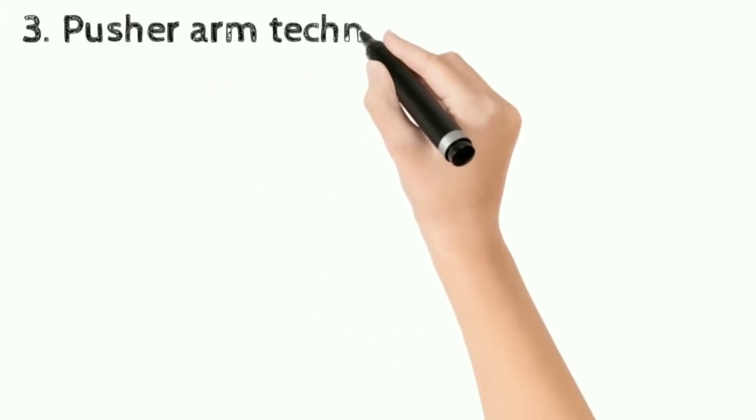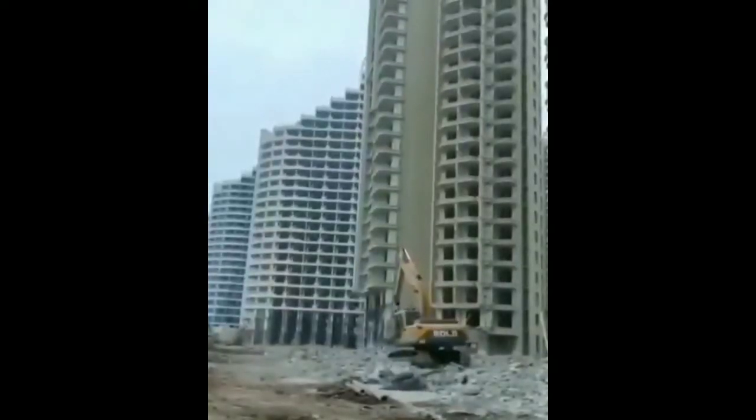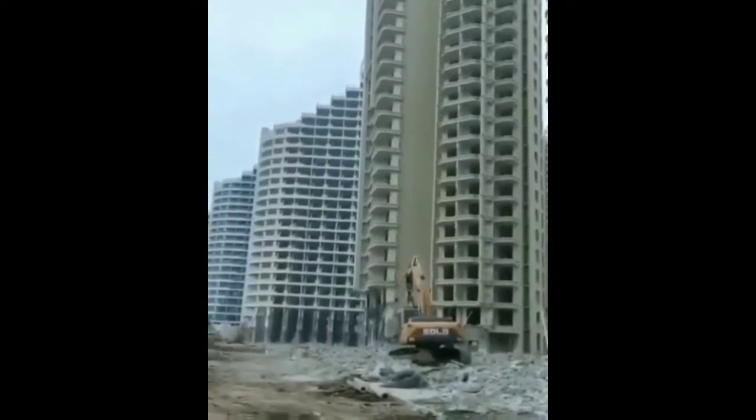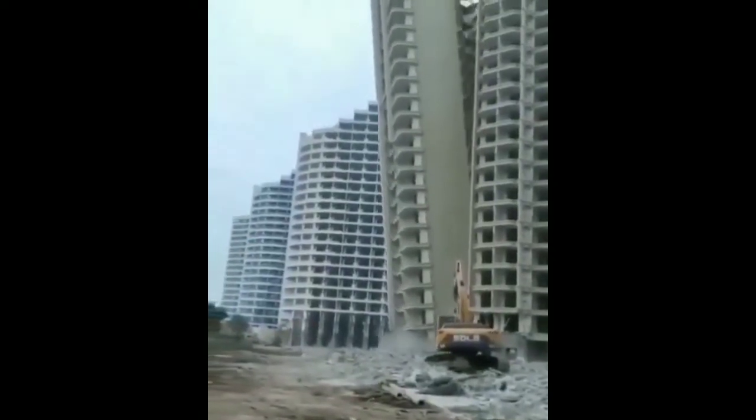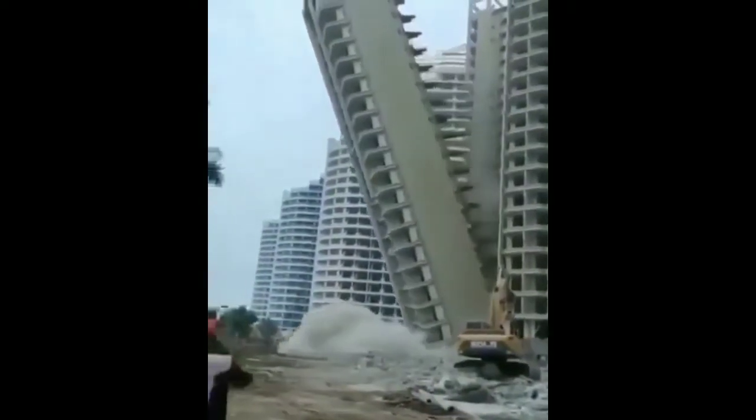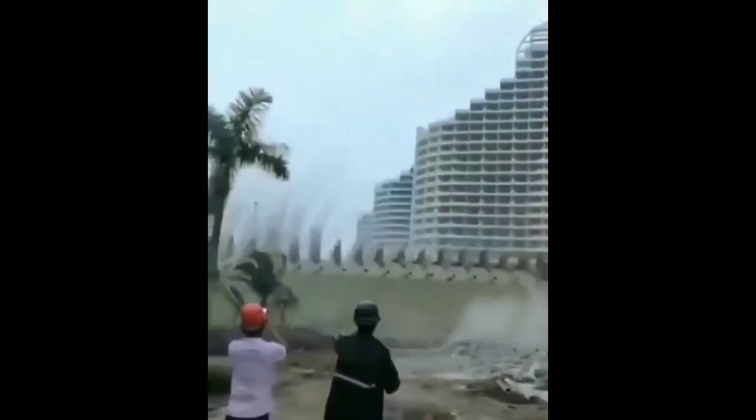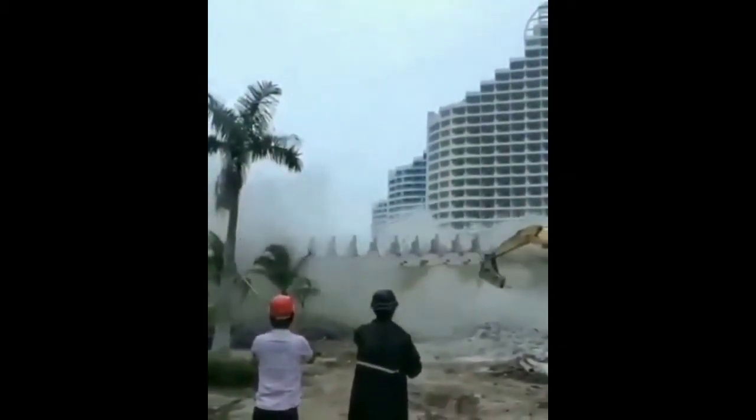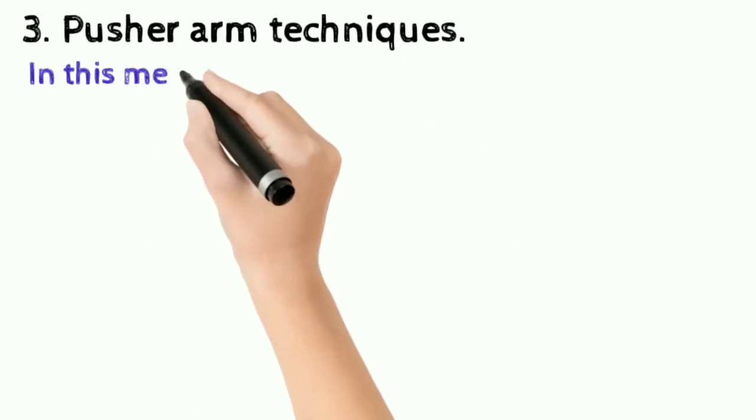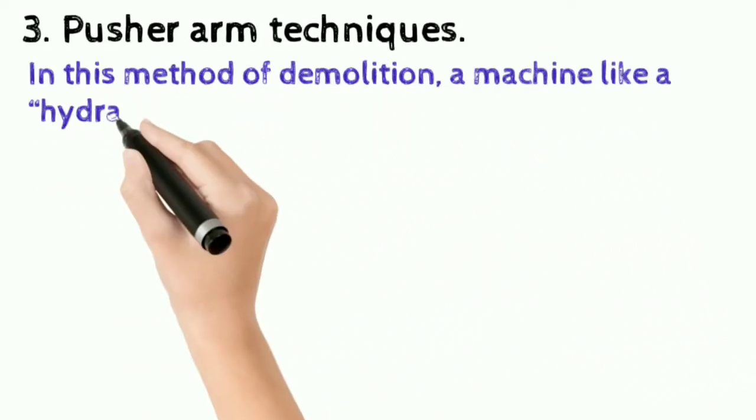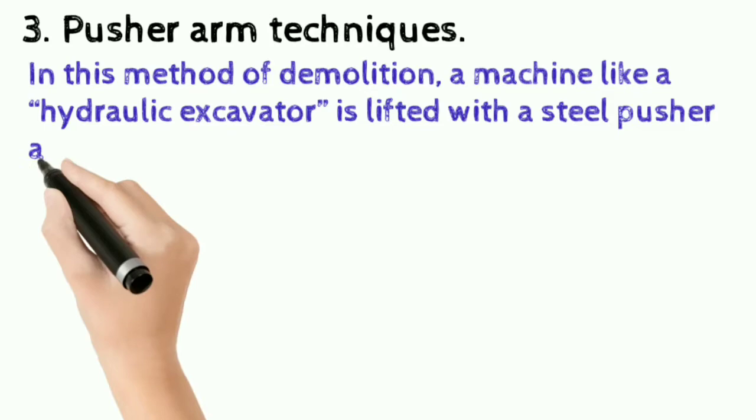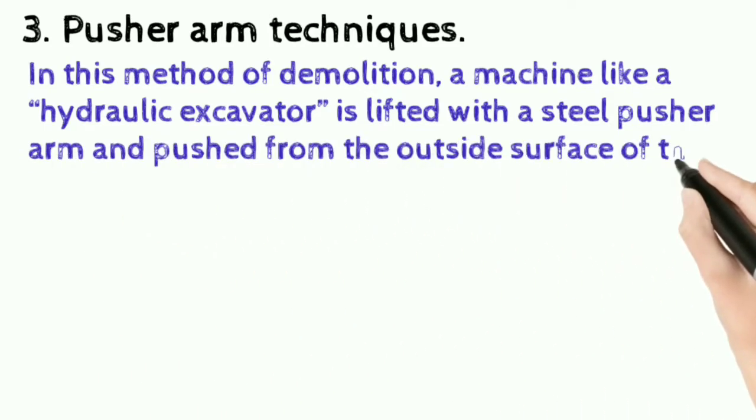3. Pusher Arm Technics: In this method of demolition, a machine like a hydraulic excavator is fitted with a steel pusher arm and pushed from the outside surface of the building.